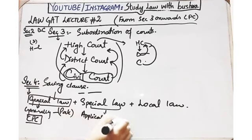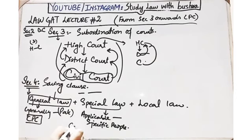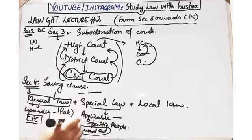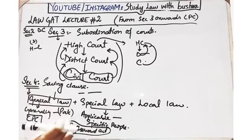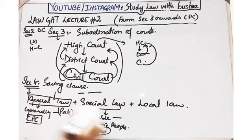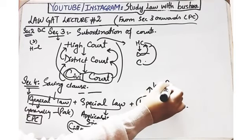Special law एक country के अंदर किसी specific लोगों पर apply होता है — होता तो पूरे पाकिस्तान में है, लेकिन कुछ खास लोगों पर apply होता है। For example, Civil Servant Act पूरे पाकिस्तान में जितने civil servants हैं उन पर apply हो रहा है — applicability पूरी जगह पर है, लेकिन specific लोगों पर। यह specific law सरकारी मुलाज़िमों के लिए है।